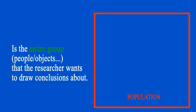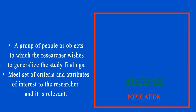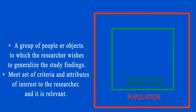Target population, or sampling frame, is a group of people to which the researcher wishes to draw inferences, establish conclusions, and generalize the study findings. This group of people must share the attributes and criteria that the researcher is interested in. It is illustrated in a green square.